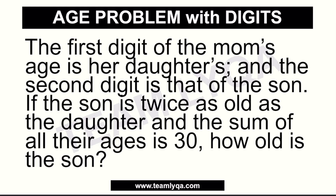Here's a sample problem. The first digit of the mom's age is her daughter's age, and the second digit is that of the son. The son is twice as old as the daughter, and the sum of all their ages is 30. How old is the son?